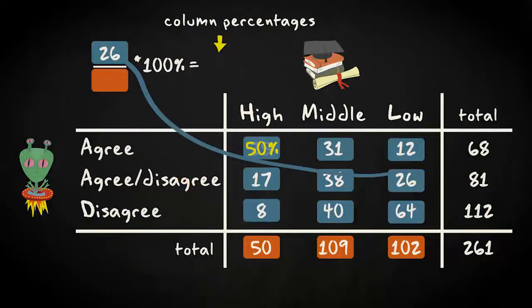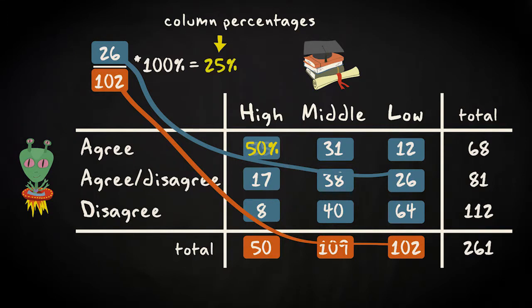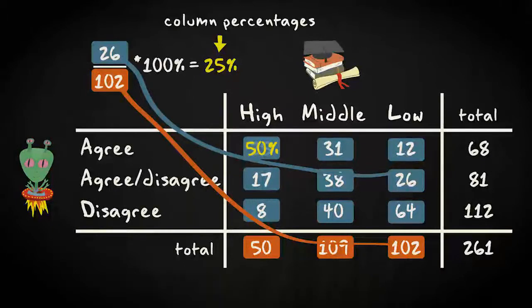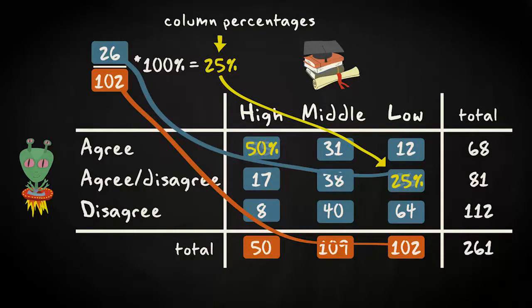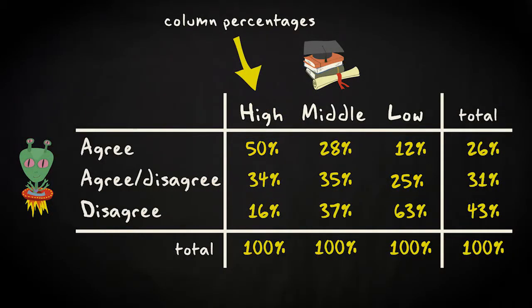In this cell, we have 26 respondents. The column total is 102. So we divide 26 by 102 and multiply again with 100. We get 25%. We do that for all cells. And this is the result.